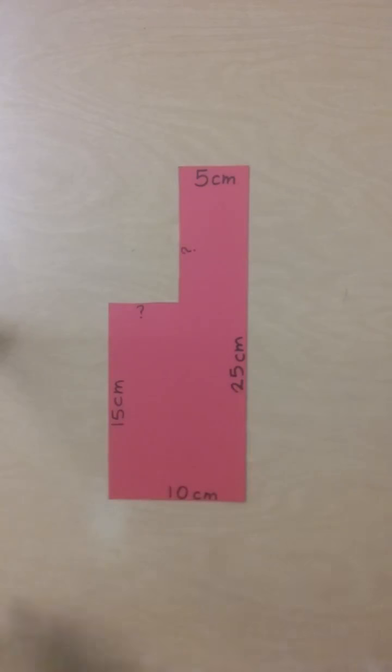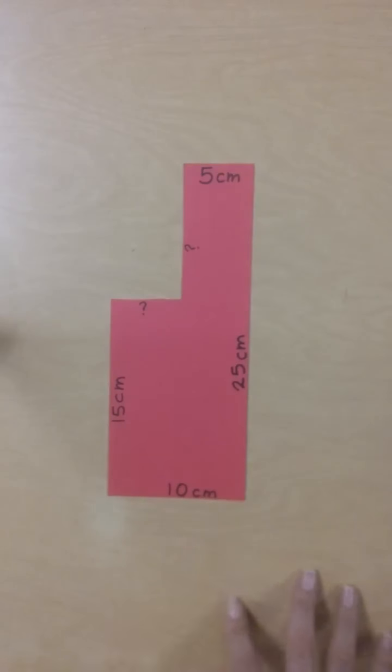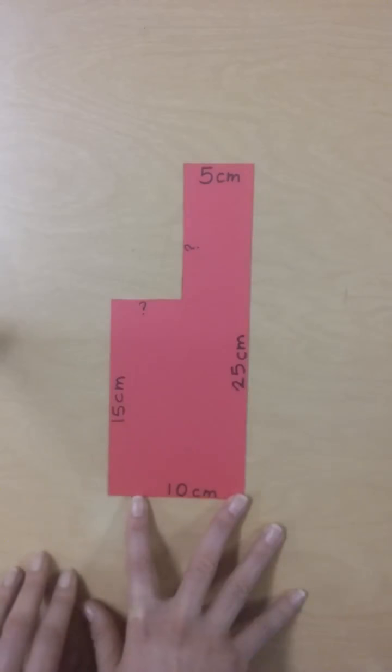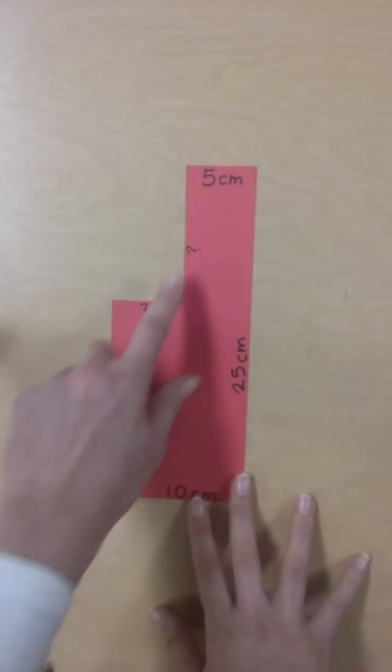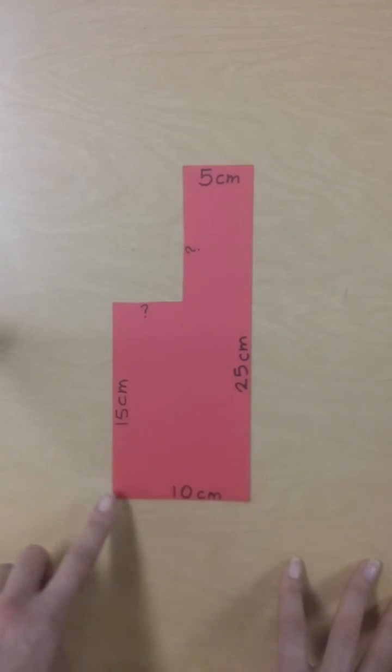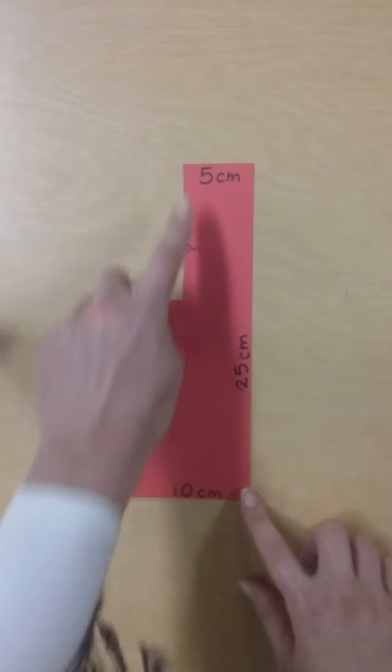Now, sometimes you have an object like this one where some of the lengths are labeled or known and some are unknown. So in this case, the base is 10 centimeters, this side is 25 centimeters, this side is 15, and this side is 5. And we're not sure what these are. But to find the perimeter, we need to add up all of the sides. So I'm actually just going to assume that these are right angles.